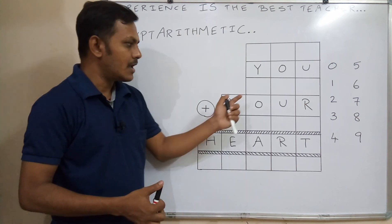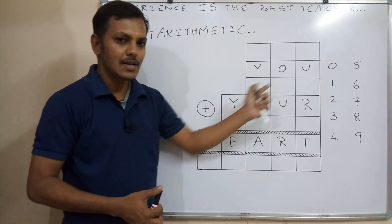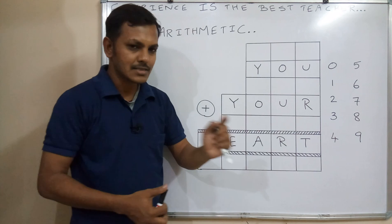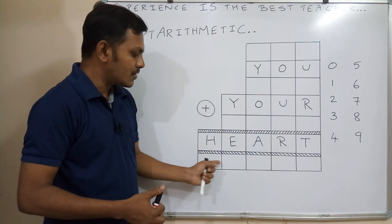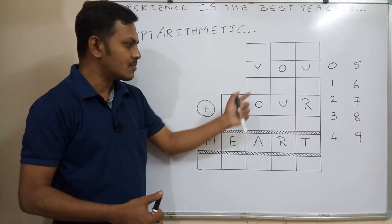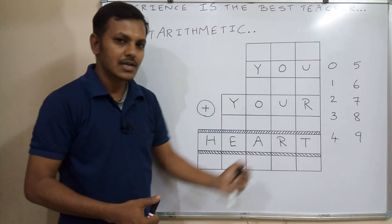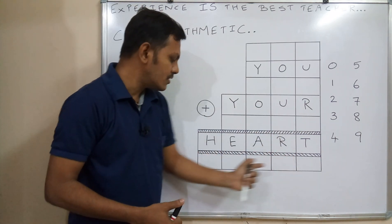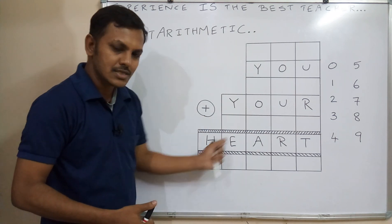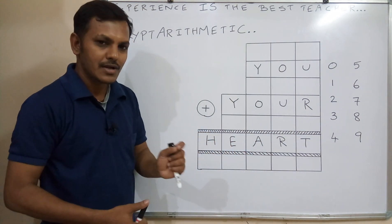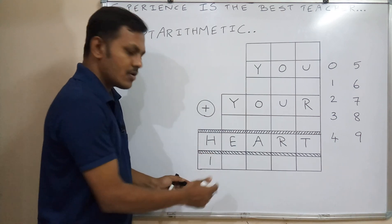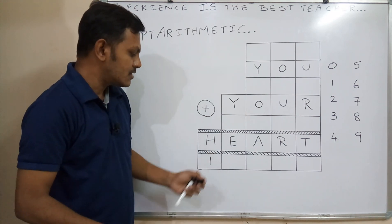For example, if you are adding the greatest 3-digit number with the greatest 4-digit number — like 999 plus 9999 — you will get 10998. So this leading box will get 1. If you are adding the smallest 3-digit number with the smallest 4-digit number, you will get 1100, meaning here you get 0. So either 0 or 1 will appear in this box. If you write 0, the result becomes a 4-digit number, but we need only a 5-digit number — so only 1 is possible.